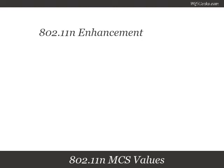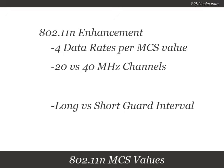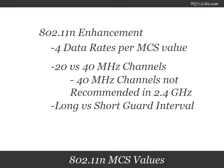The 802.11n standard also offers many enhancements over its predecessors. Each MCS value has a total of 4 different data rates depending on what 802.11n enhancements are being used. The enhancements that affect data rates are 20 versus 40 MHz channels and long versus short guard interval. It is worth noting that 40 MHz channels are not recommended in the 2.4 GHz range due to the limited amount of channels available.